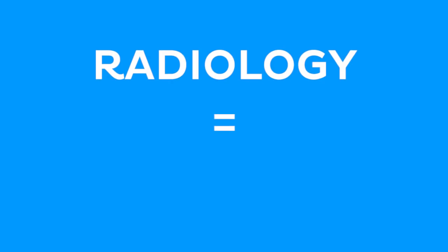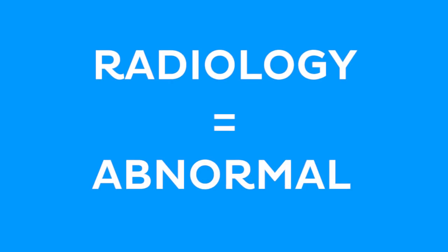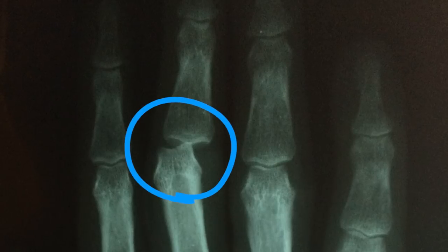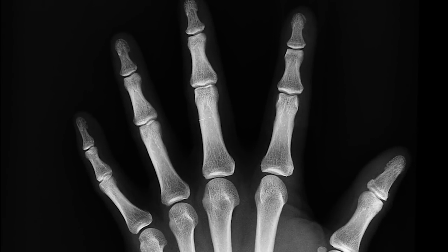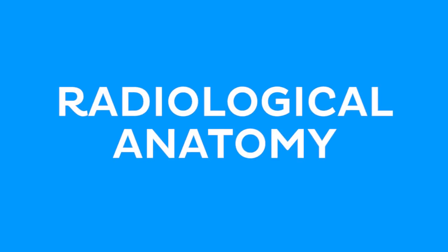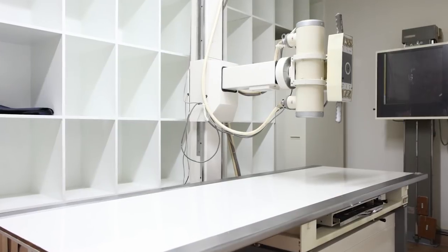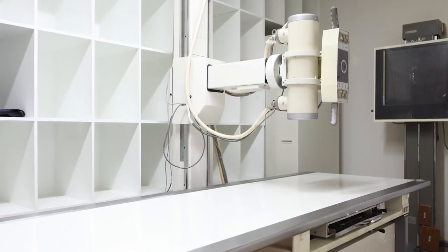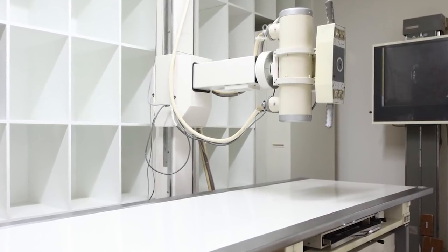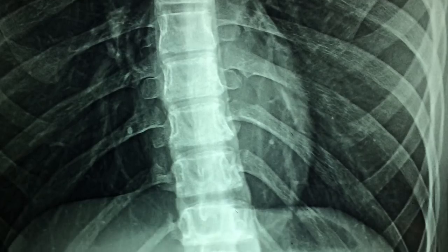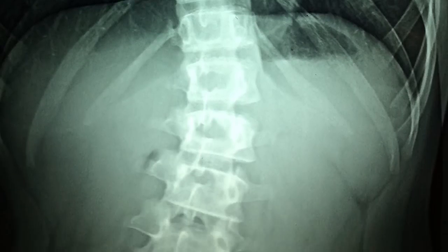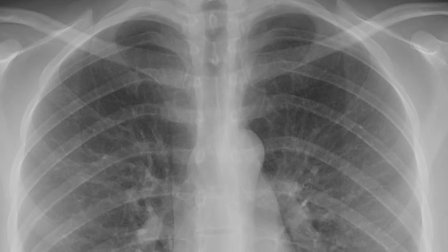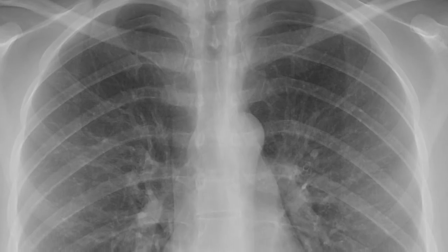So you've learned that radiology is used to tell us what is abnormal for the body. But in order to understand what is abnormal, we first need to understand what is normal. That's where radiological anatomy comes in. Radiological anatomy, or medical imaging, is created through the same techniques, but instead of identifying pathology, it is used to see how X-ray images should appear when used on a healthy body.